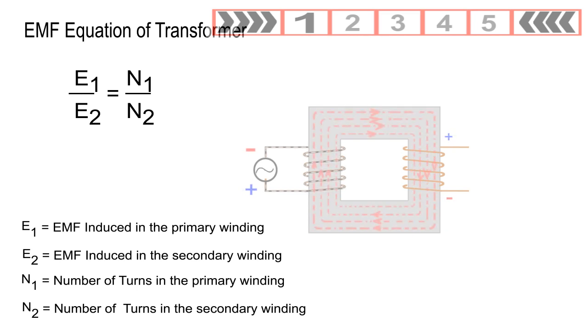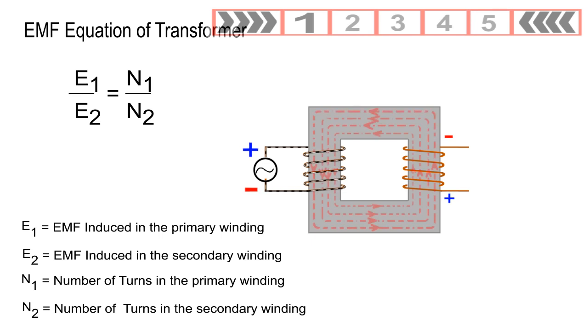where E1 and E2 are the primary and secondary induced EMFs, and N1 and N2 are the number of turns in primary and secondary winding respectively.